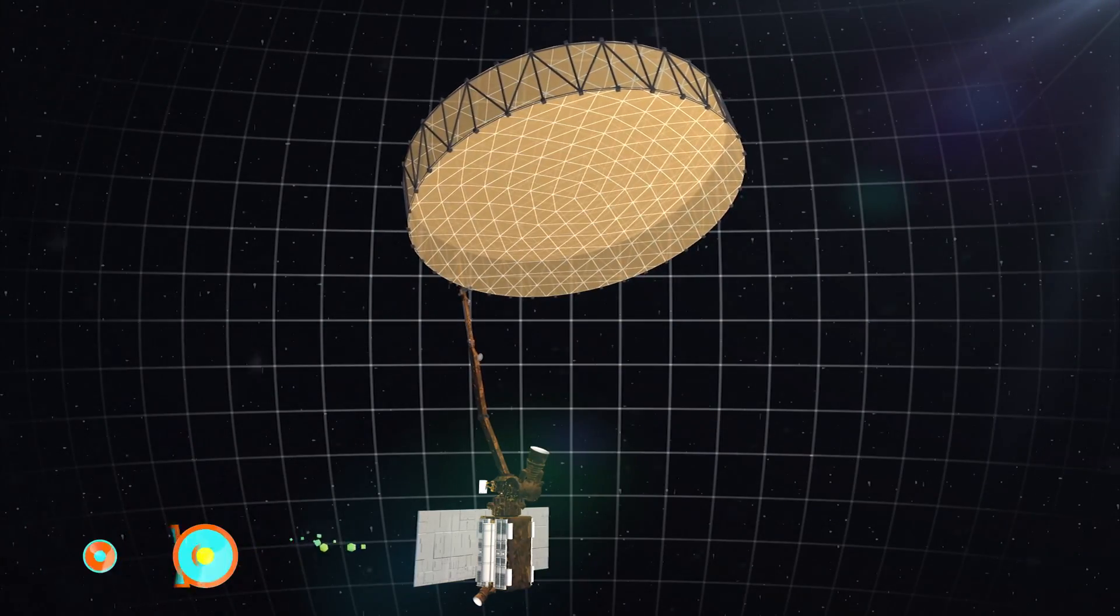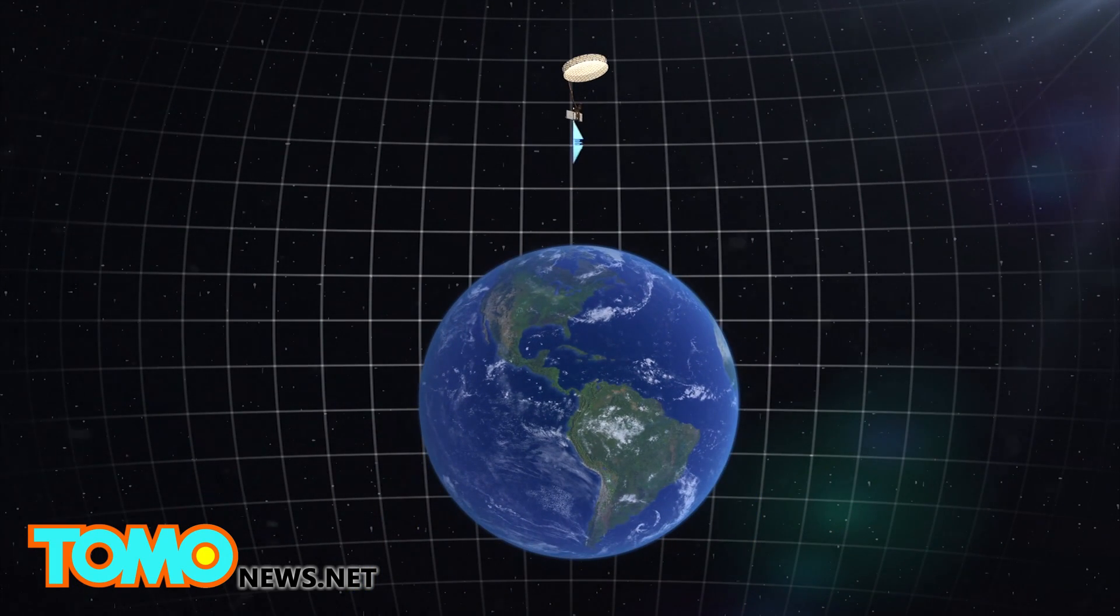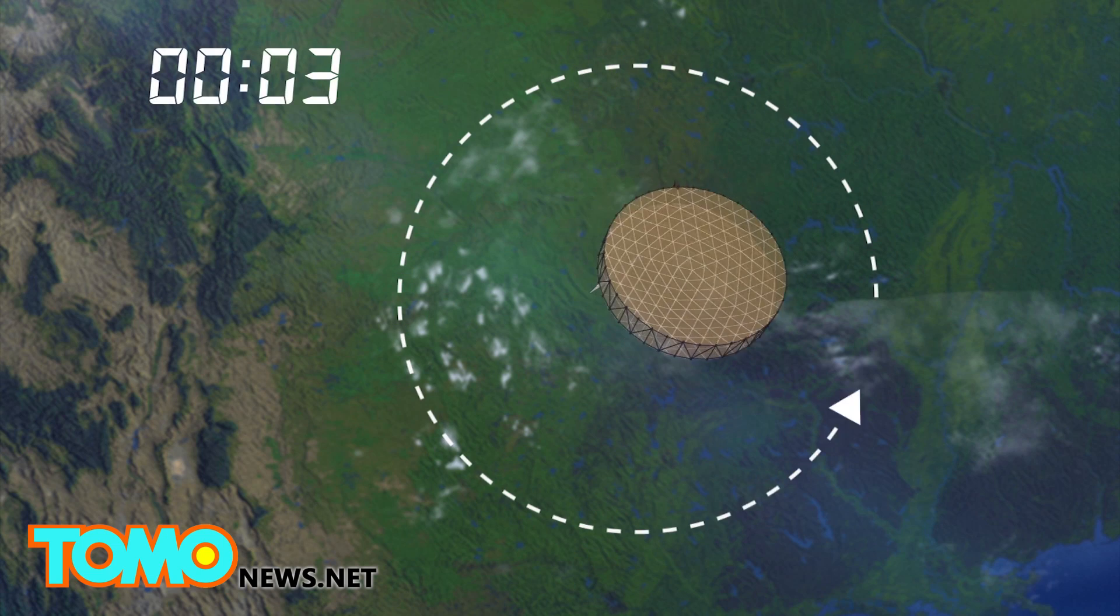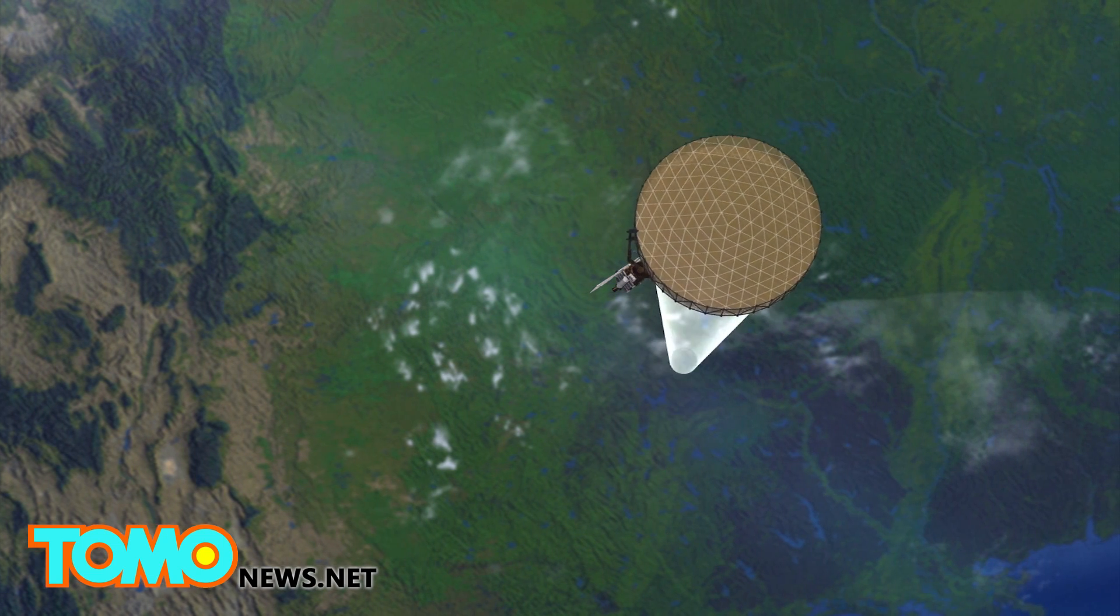NASA's Soil Moisture Active Passive satellite orbits 685 kilometers above the Earth's surface. Its antenna, which spins at 14 revolutions every minute, is the largest rotating antenna of its kind.